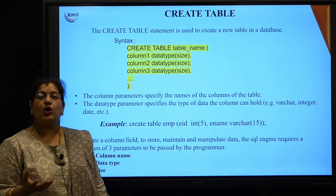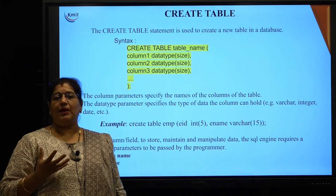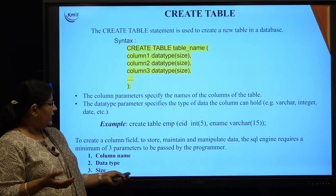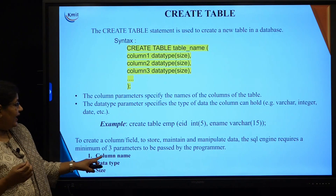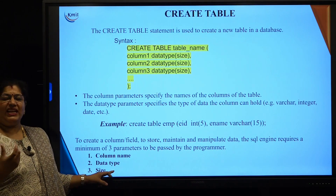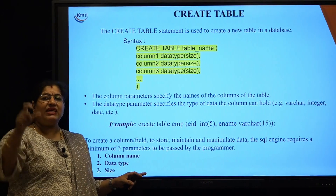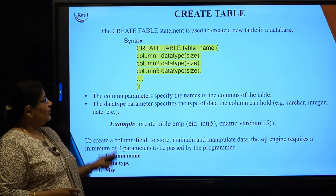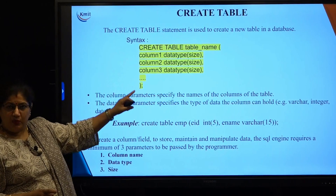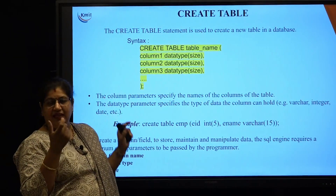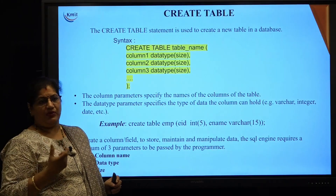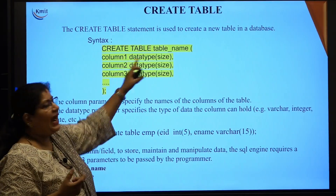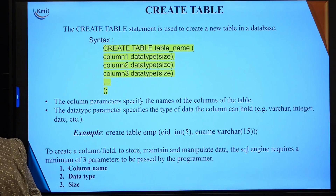The next important database object is the table — tables are the heart of the database. When creating a table to store information, three things are very important along with the table name: each column name, its data type, and the size allocated for it. The general syntax is: CREATE TABLE table_name (column_name data_type(size), ...).